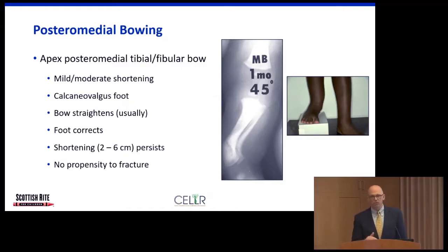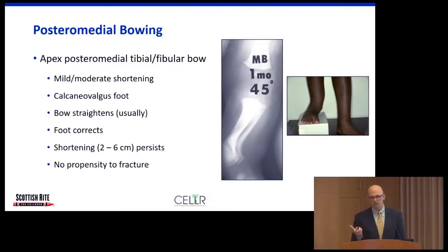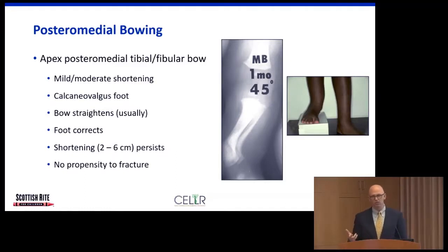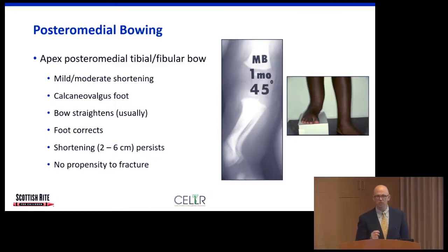The long-term effect of posteromedial bowing is a leg length difference at skeletal maturity, most commonly two to six centimeters, with three to five centimeters being by far the most common. This amount of discrepancy doesn't usually require treatment until the child is closer to being done growing, when it can be addressed with an epiphysiodesis — slowing growth of the long leg so the short leg catches up. Very rarely, if it's five or six centimeters, a lengthening is needed.